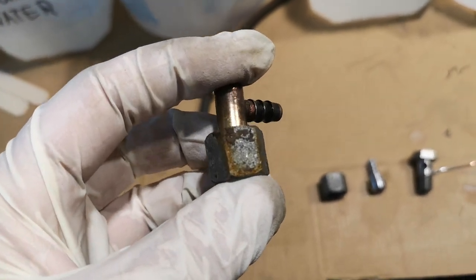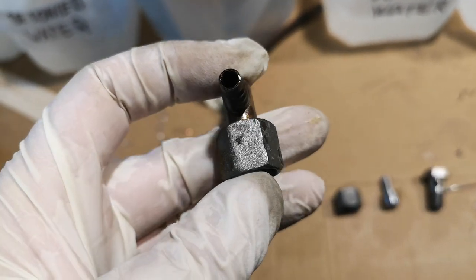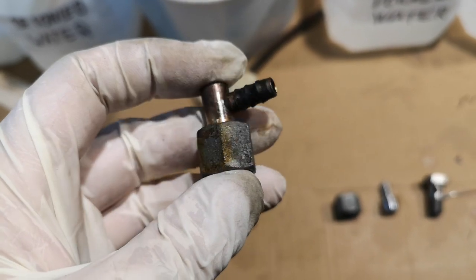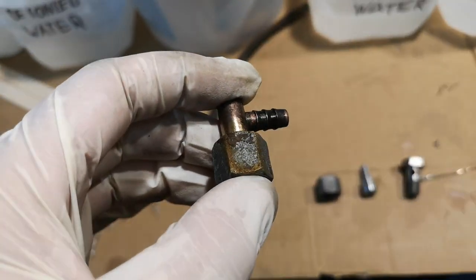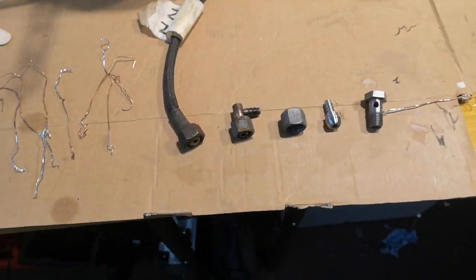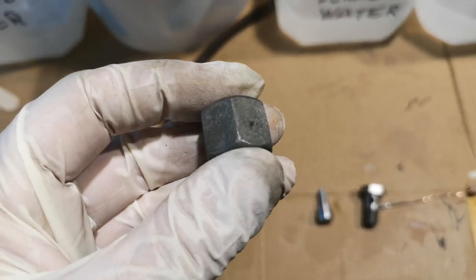This part obviously needs some more work, like you can see here. But you can put it into the acid for about an hour and then rework it with the wire wheel and then put it back. After that process, after about two hours, the part comes out looking like this.